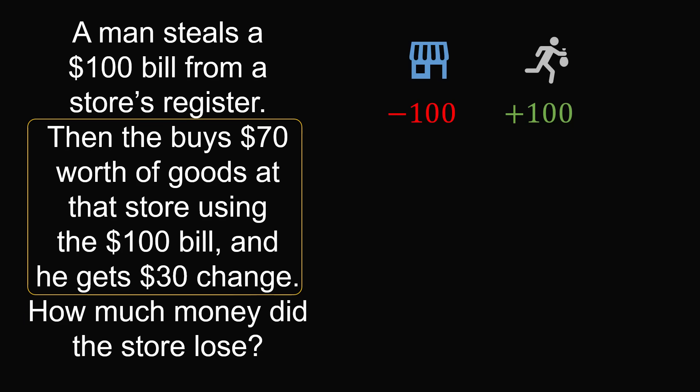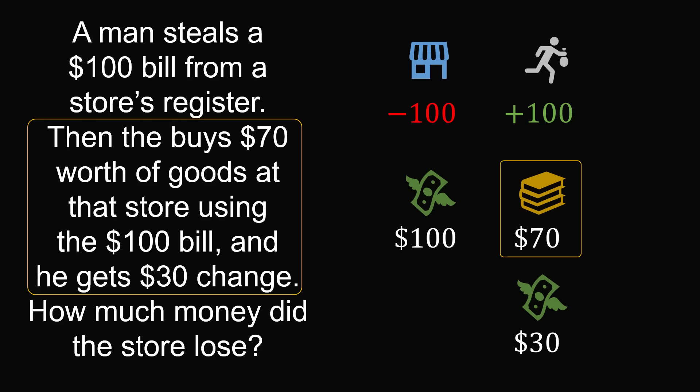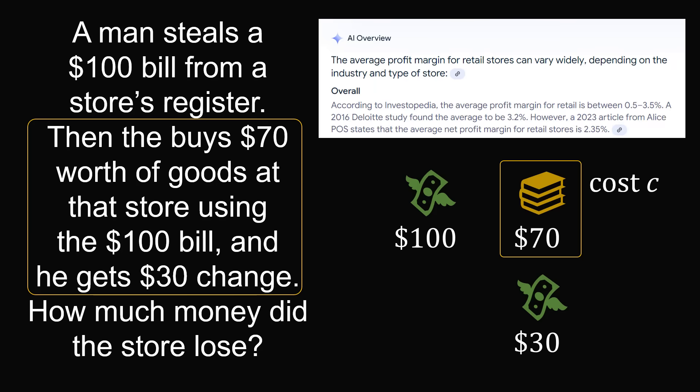If you wanted to go into a bit of accounting, you could look at the $70 worth of goods and say it actually costs the store some amount C, with some profit margin. The net profit margin isn't going to be that much for the store — you have to account for time to sell the item, shelf space, opportunity cost, items being returned, and so on. In a perfectly competitive market, we'd say the cost is about $70, so it all cancels out. If someone is getting to this level of detail, they still understand the general point of the question.